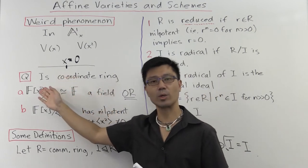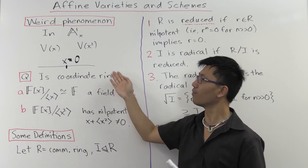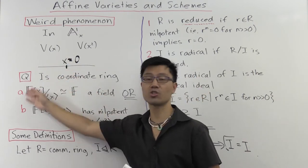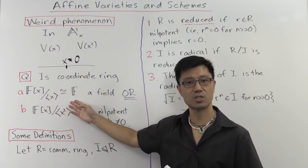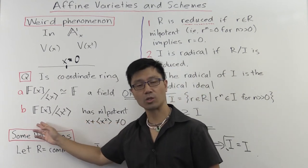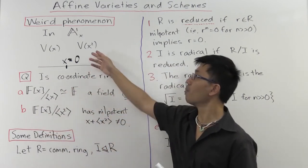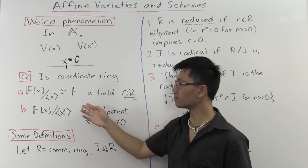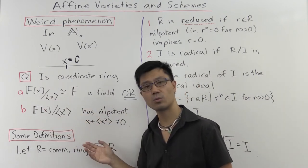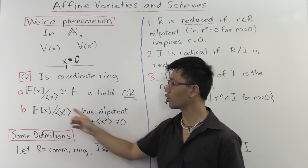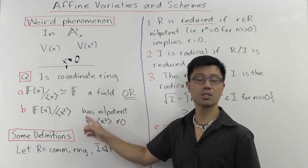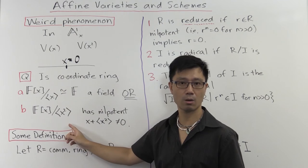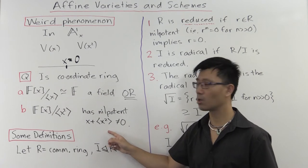The following question arises: what is the coordinate ring of this single point? Is it the quotient of the polynomial ring by the ideal generated by x — which is just isomorphic to the field f — or is it the quotient ring f[x] modulo the ideal generated by x squared? These two rings are very different. The second ring is not a field; the easiest way to see that is to look at the coset containing x, which is nilpotent: when you square it, it lands inside the ideal, so it's 0. So you have a non-zero element whose square equals 0.